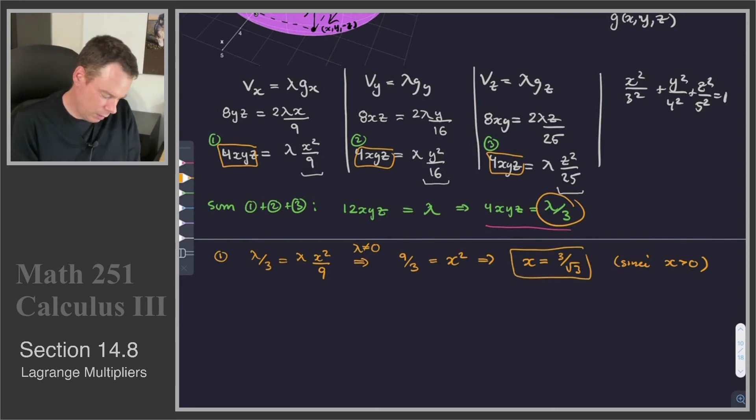So we've got our x value. Now similarly, I could take that equation for 4xyz = λ/3, and I can plug it into equation 2, and then plug it into equation 3. So what I would get is λ/3 = λy²/16.